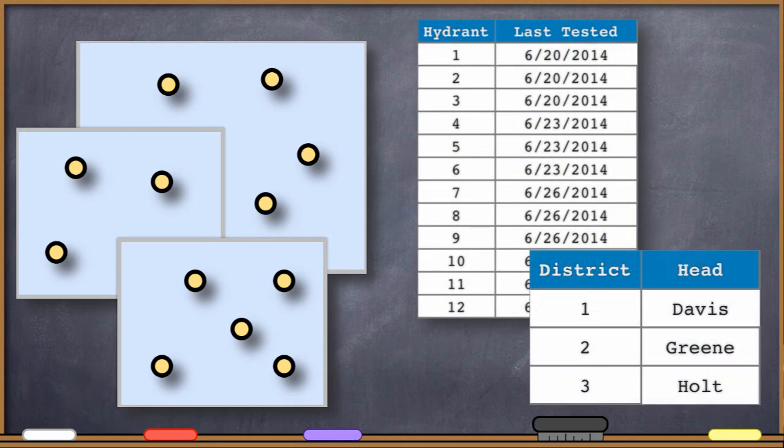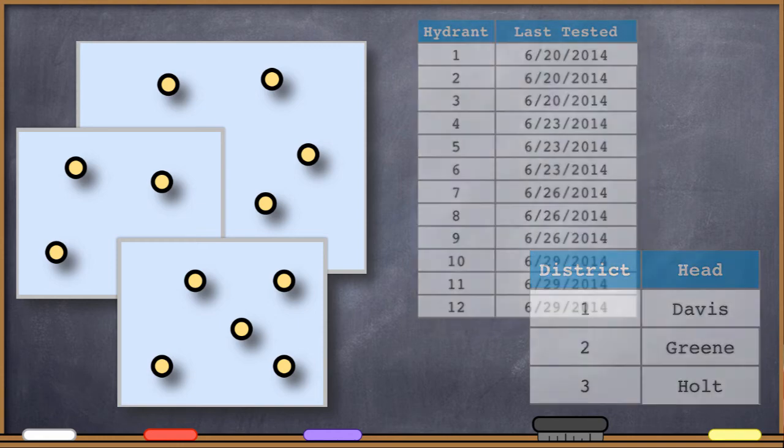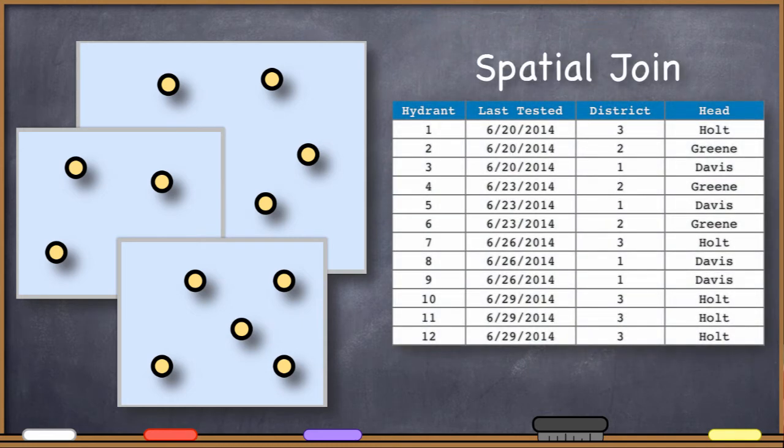then a spatial join would look at which particular district each particular fire hydrant is sitting in, and then you could have that information appended to the attribute table.